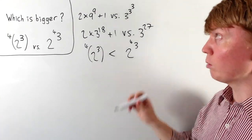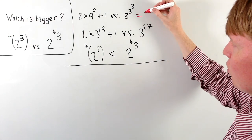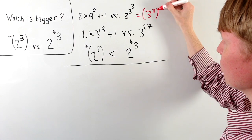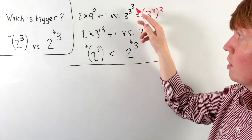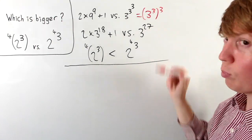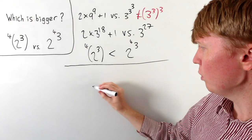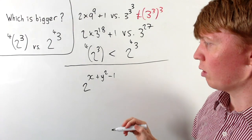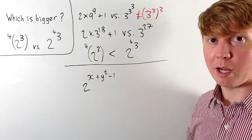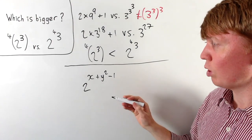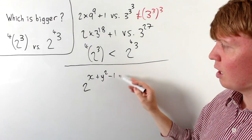We'll finish by exploring why we evaluate power towers working downwards rather than upwards. If you worked upwards, you might write 3 to the power of 3 and then raise that answer to the power of 3. Part of why we don't do this is it would make the notation redundant — you'd just write 3 to the 3 in brackets, raised to the power of 3. Here's a clearer example: consider 2 to the power of x plus y squared minus 1. It's clear we evaluate the entire exponent first, not raise 2 to the power of x plus y and then square the result.